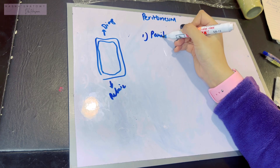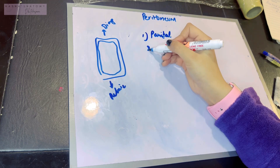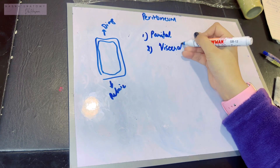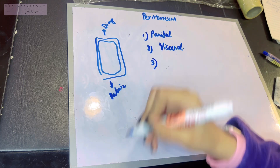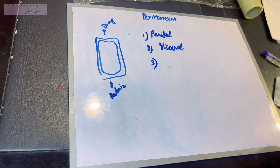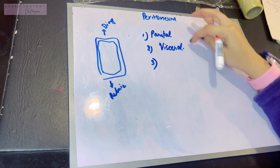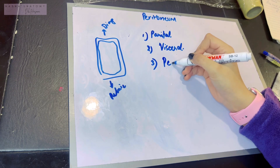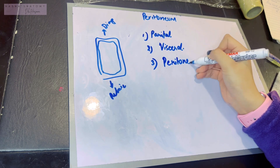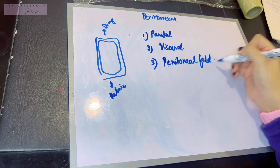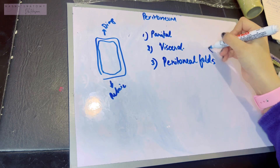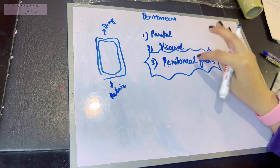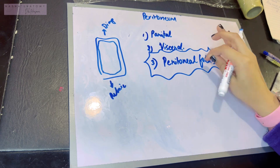The most important part of the peritoneum is its various parts. The first part is the parietal peritoneum and the second part is the visceral peritoneum. Unlike the pleura of the lungs or the pericardium, in the case of the peritoneum we also have to study the peritoneal folds, and this is why things usually get complicated.